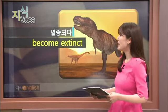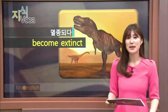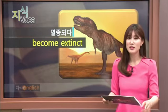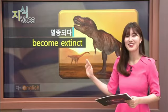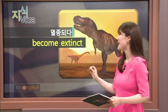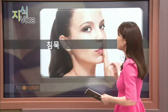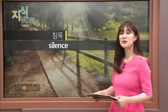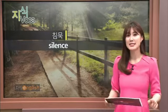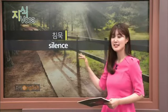So, '멸종되다' is 'become extinct' — this is an expression you must use in today's theme, so remember it. Become extinct. Now the second key expression is '침묵' — silence. 침묵 is 'silence,' spelled S-I-L-E-N-C-E.